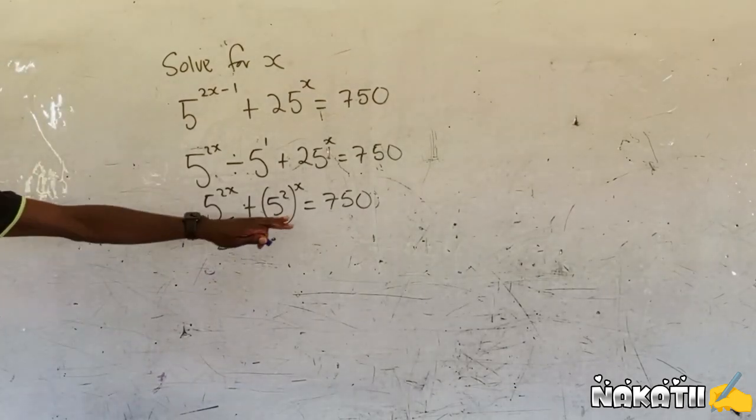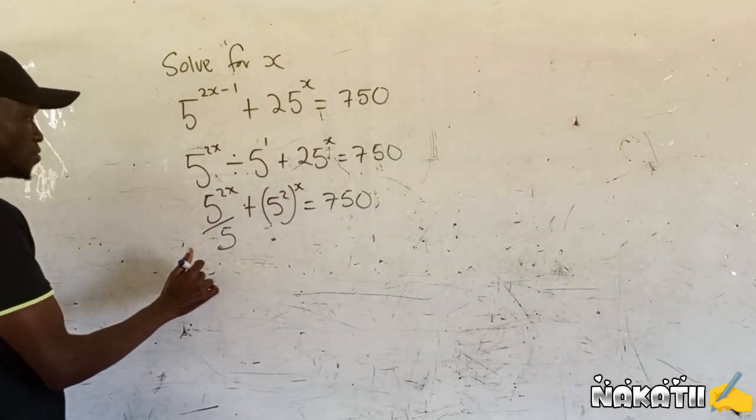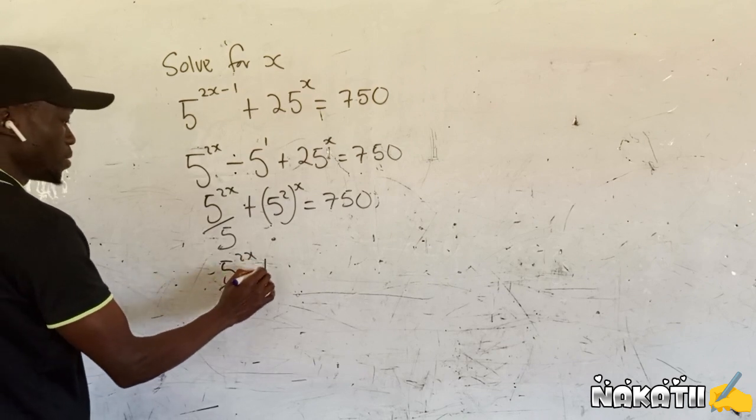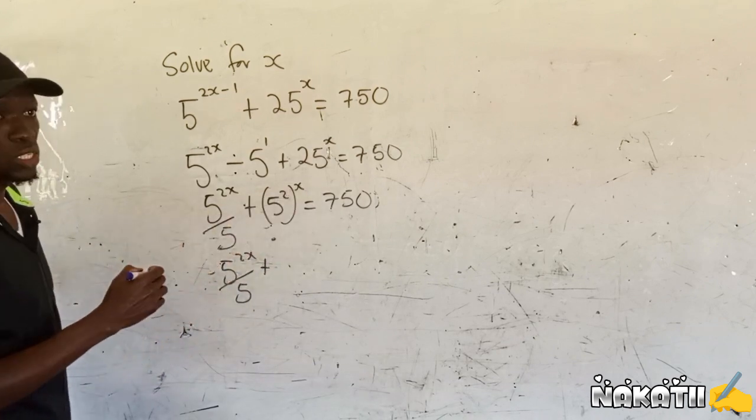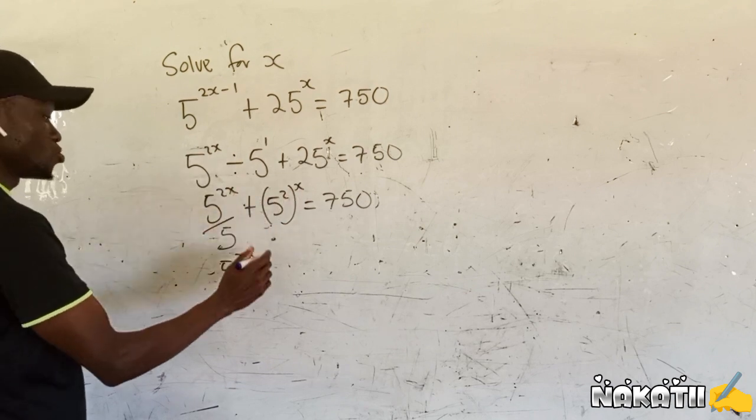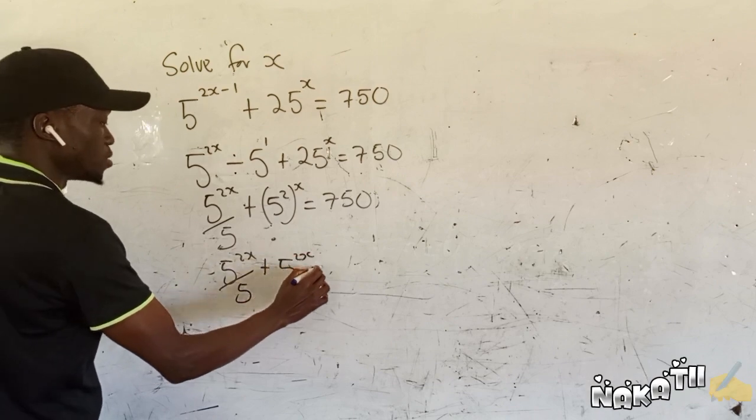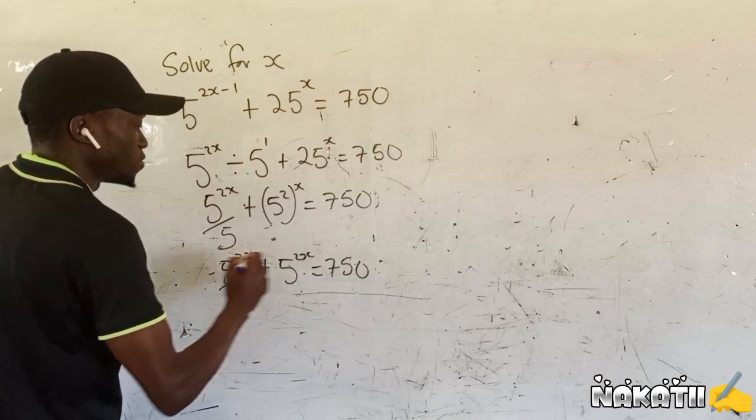Then when we simplify this one, you can have 5^x divided by 5, plus when using laws of indices, we can multiply these two so that we have 5^(2x) equals 750.